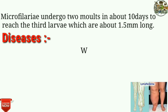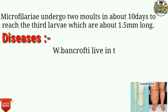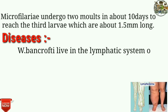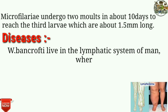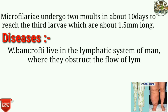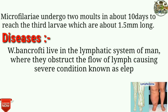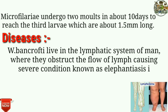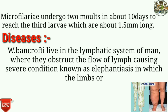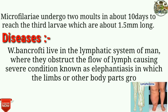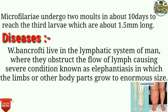Diseases: Wuchereria bancrofti lives in the lymphatic system of humans, where it obstructs the flow of lymph, causing a severe condition known as elephantiasis, in which the limbs or other body parts grow to enormous size.